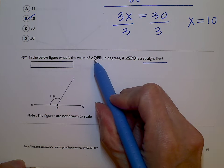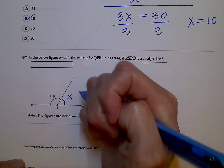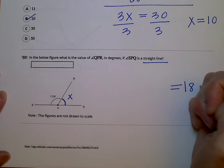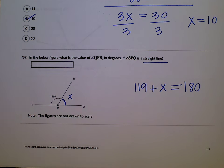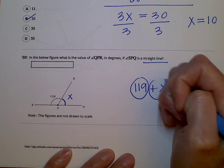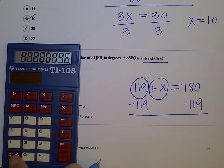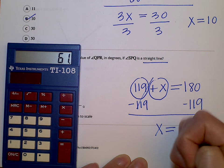We want to find the measure of QPR. That is this angle right here, so we're going to make that an x because we don't know the measure of that. And then we have 119 on the other angle. If the straight line equals 180 degrees, then those added together will equal 180 degrees — they are both on that line, so they're supplementary angles. 119 plus x equals 180. Subtract 119 from both sides: 180 minus 119 equals 61. So x is equal to 61.